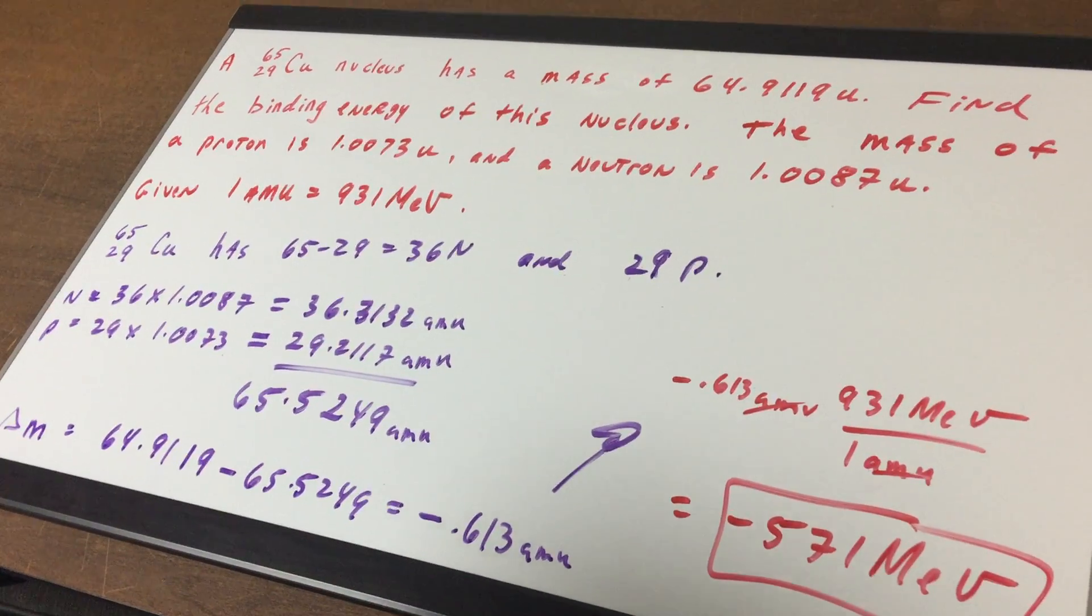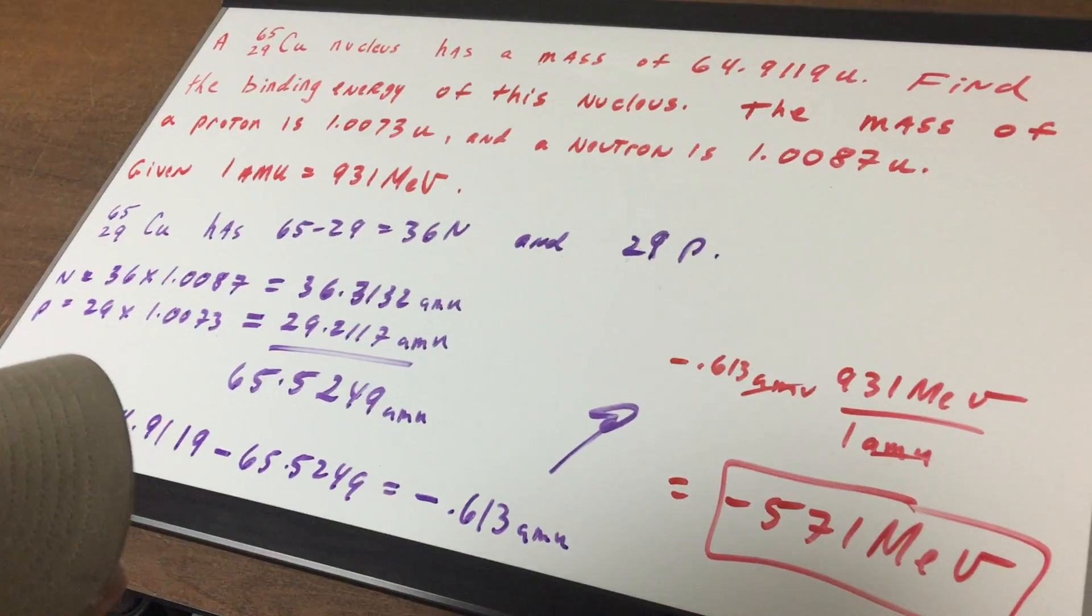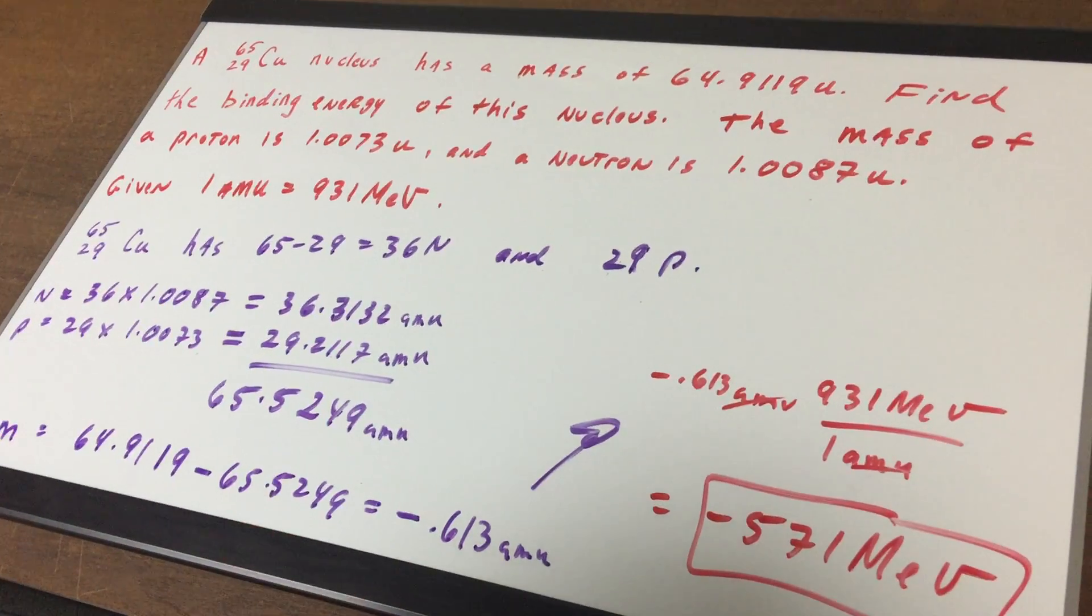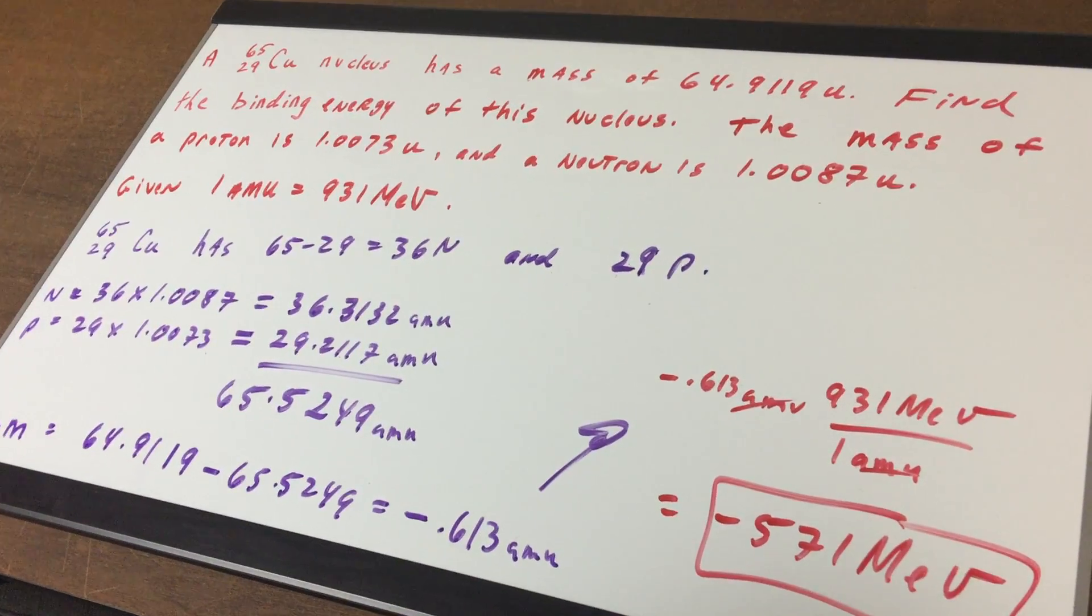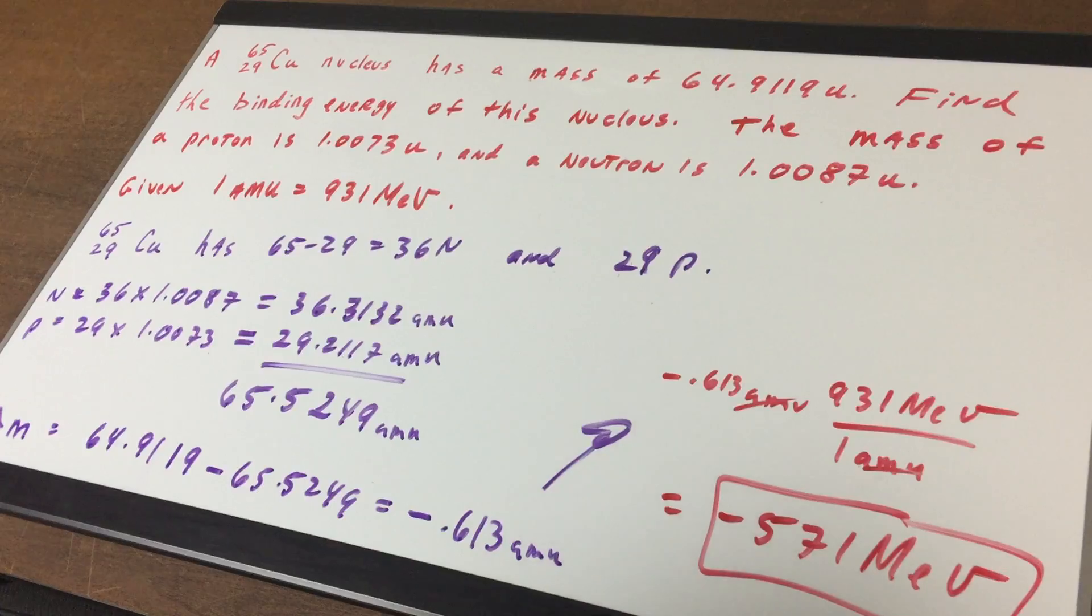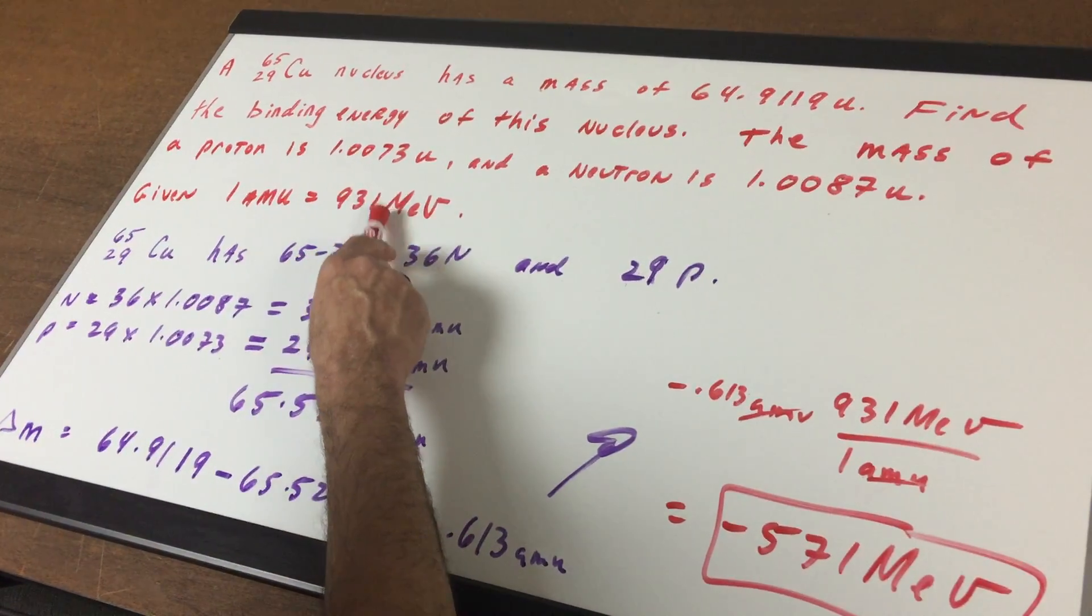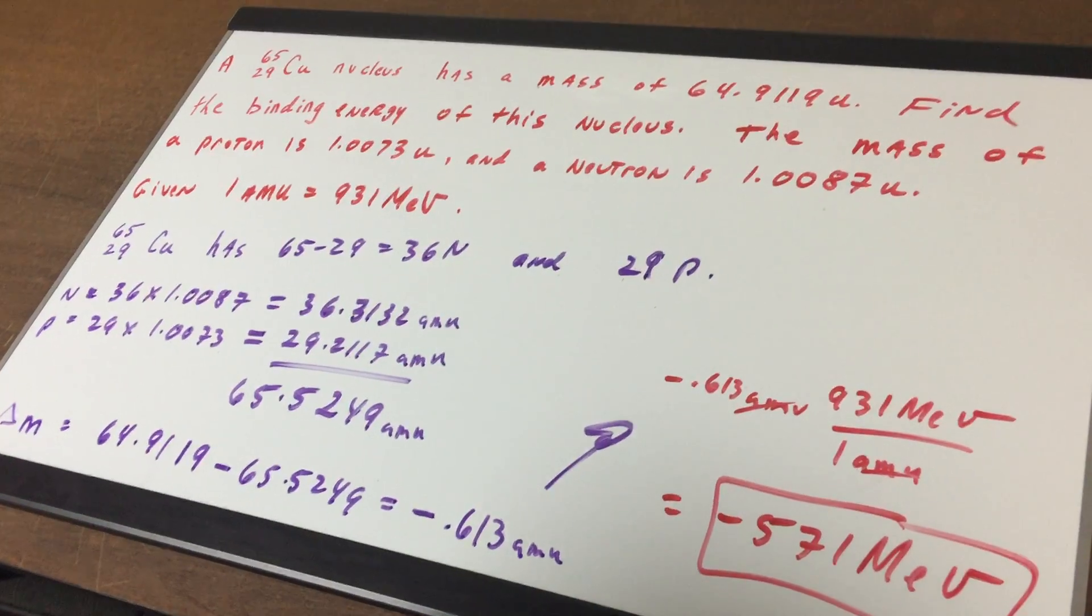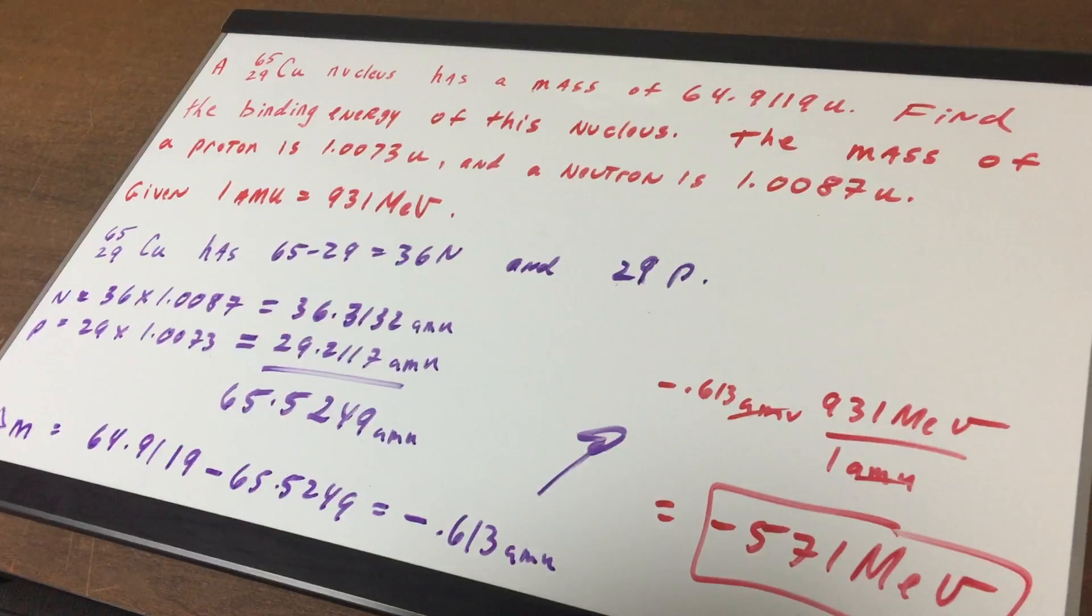This is another way instead of using the Einstein equation like I did in the previous example. This is a great way to calculate the binding energy. You could have also used the Einstein equation, but if I give you the conversion of 931 mega electron volts per AMU, all you have to do is multiply.